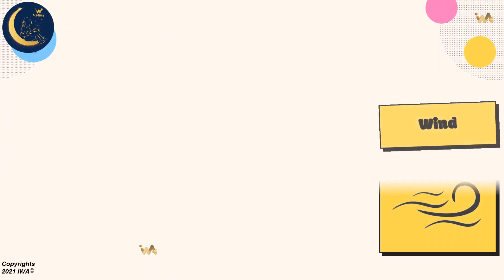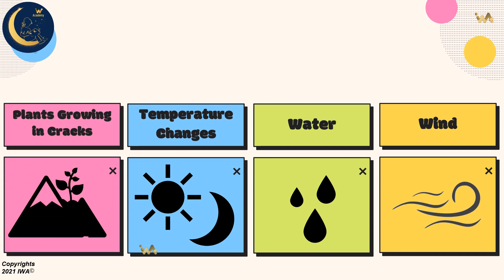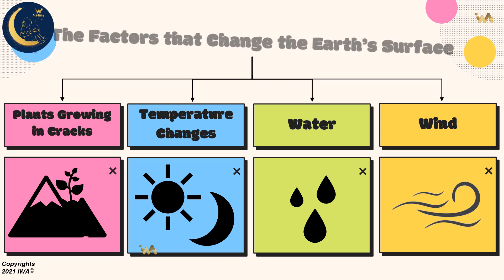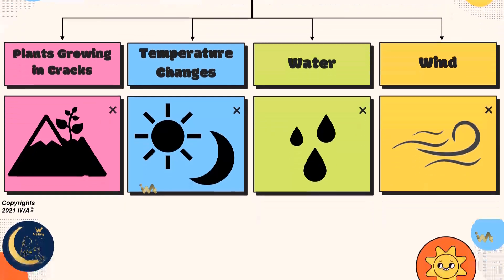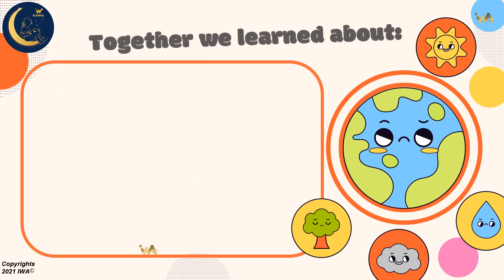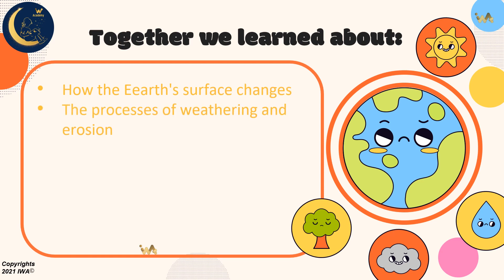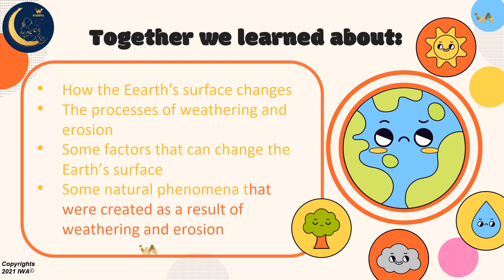So wind, water, temperature changes, and plants that grow in cracks of rocks are all factors that change the Earth's surface. Together, we learned about how the Earth's surface changes, the process of weathering and erosion, some factors that can change the Earth's surface, and some natural phenomena that were created as a result of weathering and erosion.